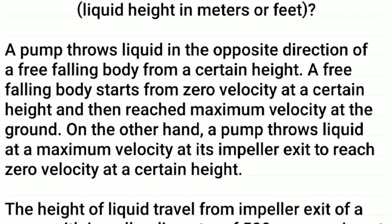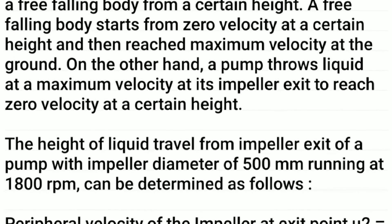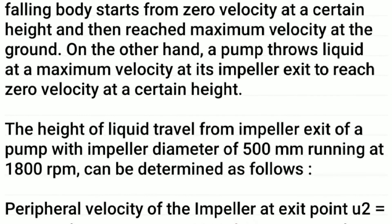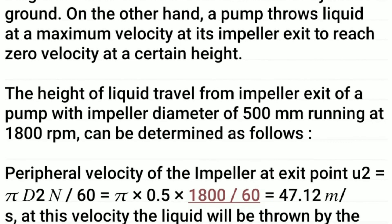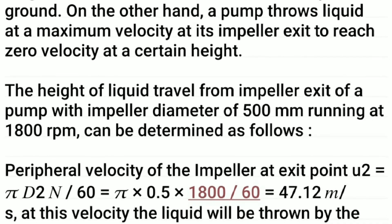A free-falling body starts from zero velocity at a certain height and then reaches maximum velocity at the ground. On the other hand, a pump throws liquid at maximum velocity at its impeller exit to reach zero velocity at a certain height.